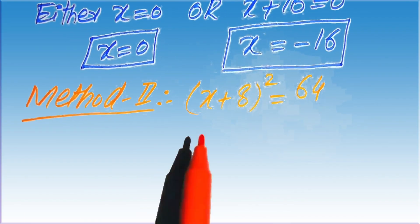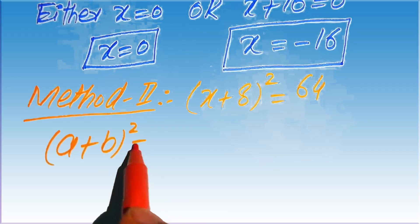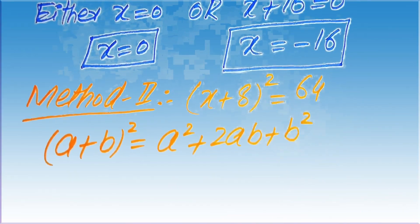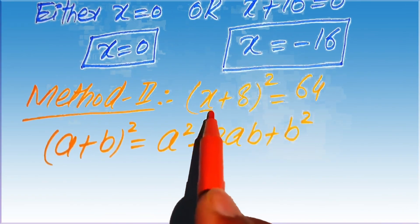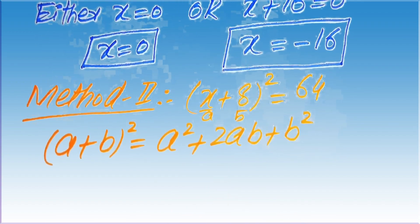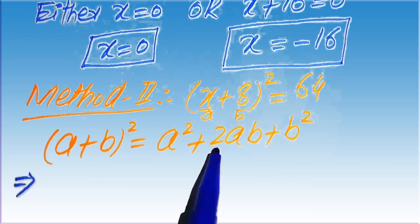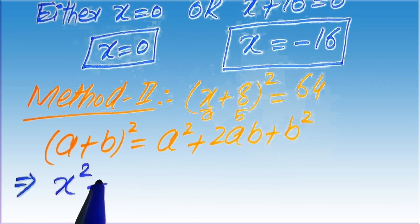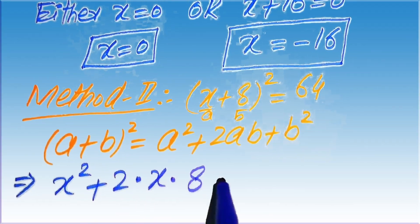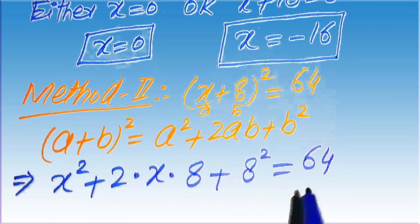In the second method, we apply the algebraic formula: a plus b whole squared equals a squared plus 2ab plus b squared. Here, a is x and b is 8, and we apply this formula to the left-hand side of the equation, giving x squared plus 2 times x times 8 plus 8 squared equals 64.